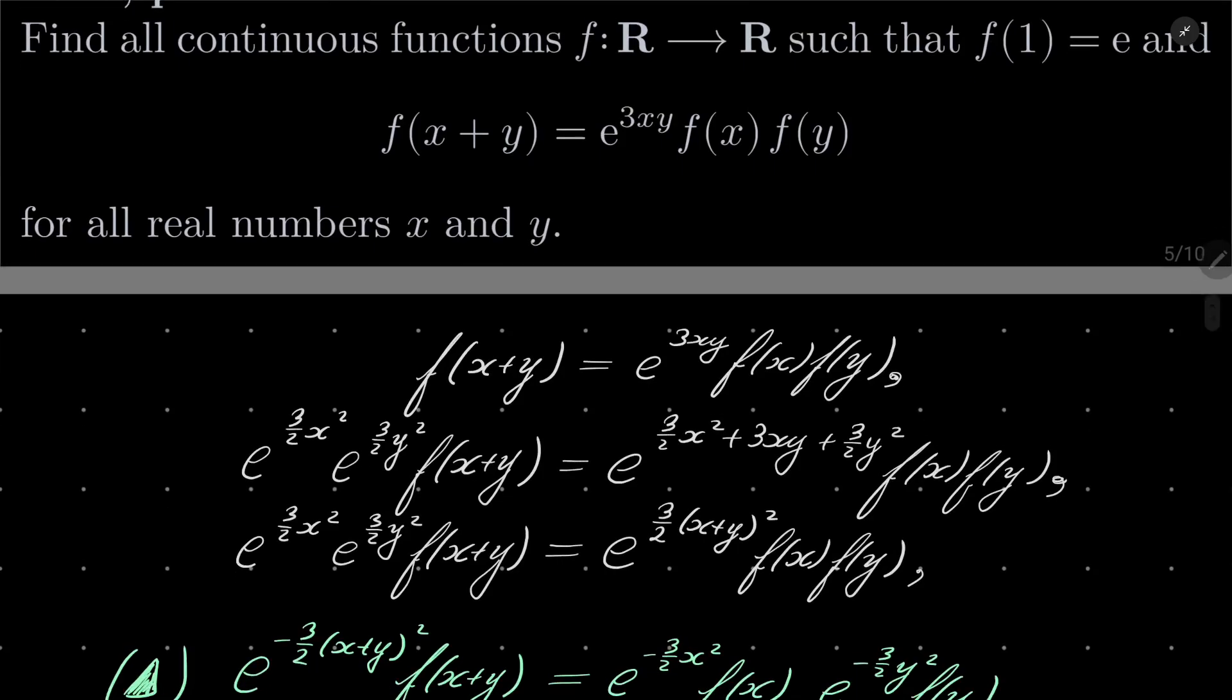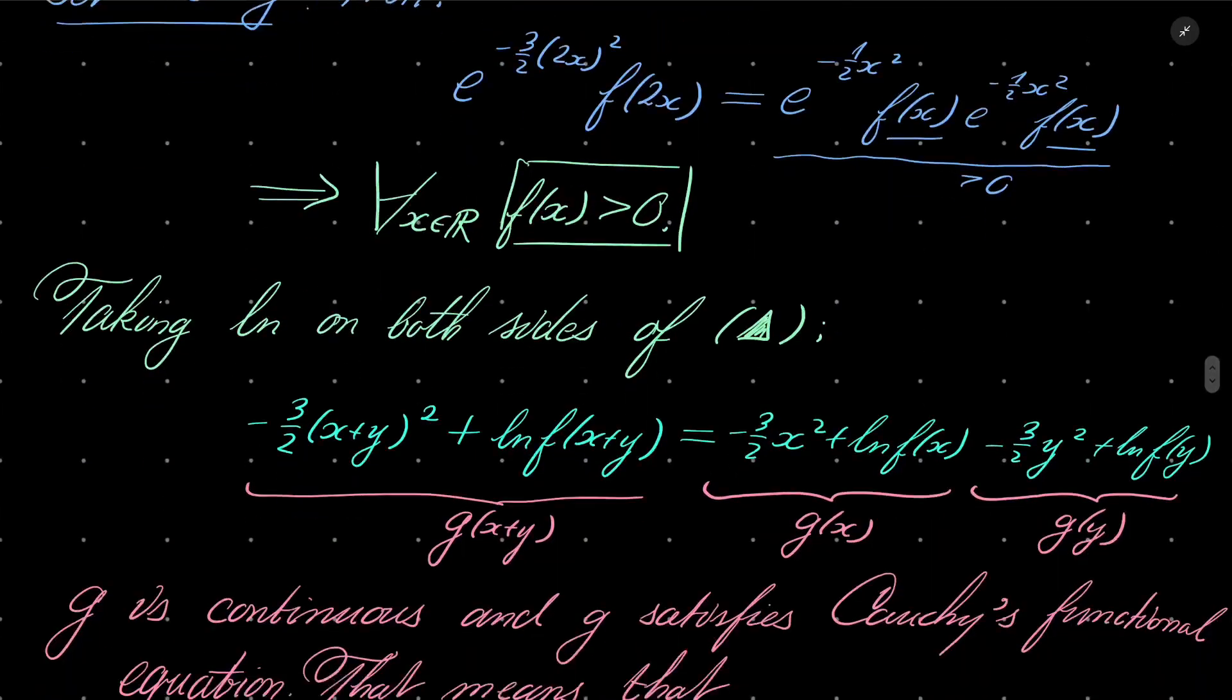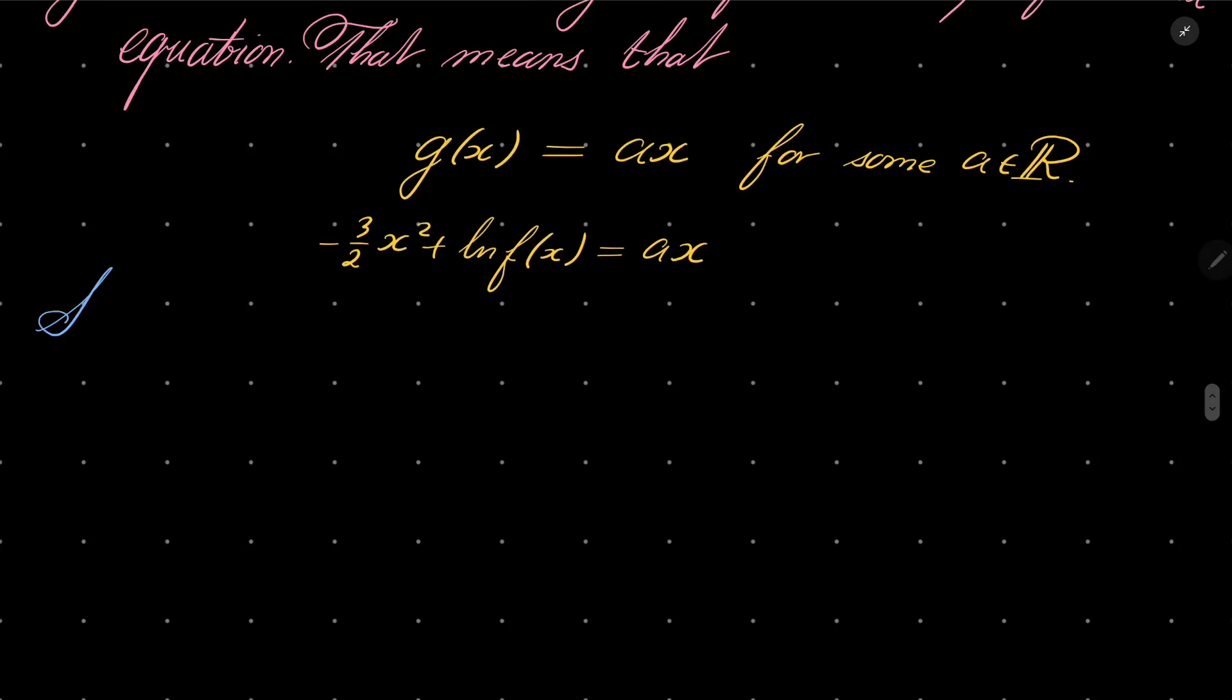So set x to be 1, and we get the following. Minus 3 over 2 plus natural log of f(1) equals a. f(1) is e, natural log of e is 1. 1 minus 3 over 2 is minus 1 half. So we have our value of a.